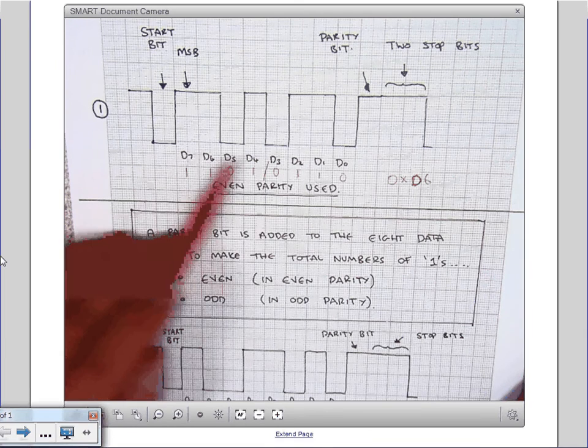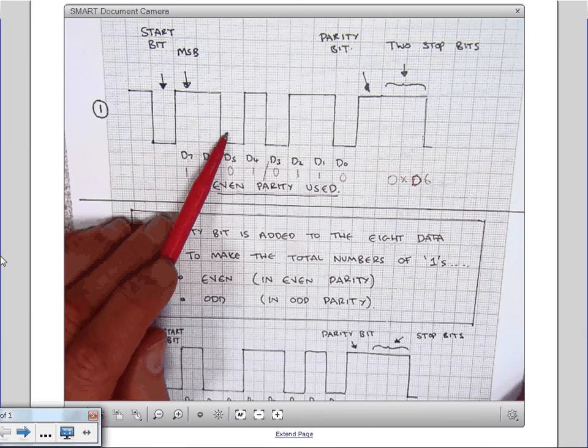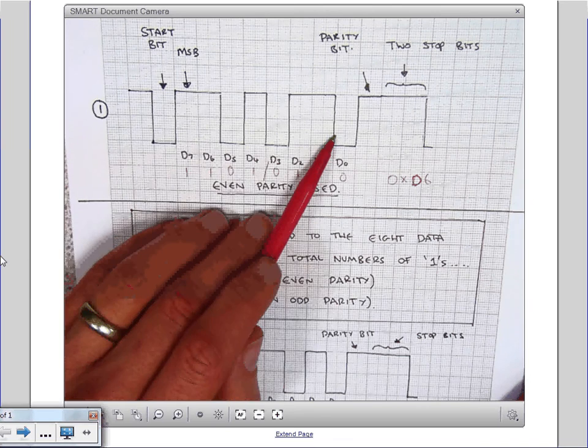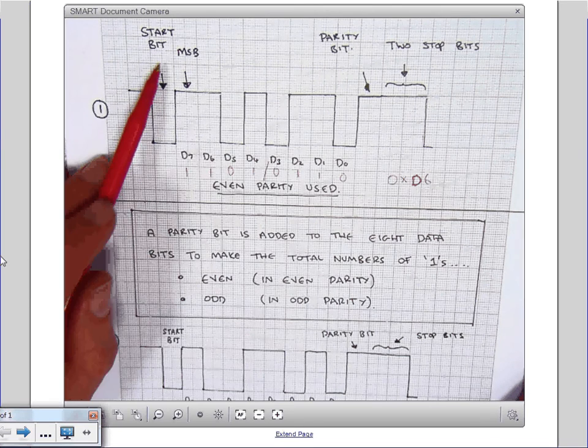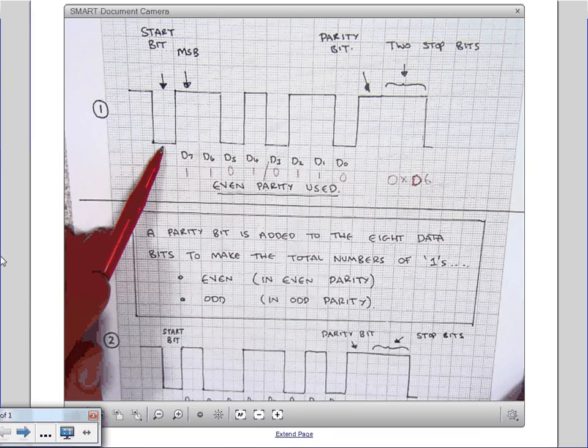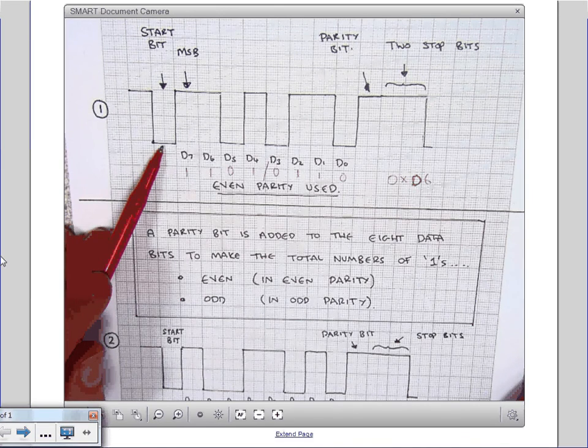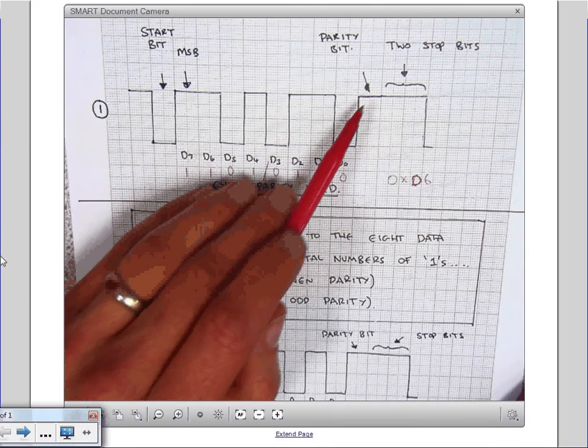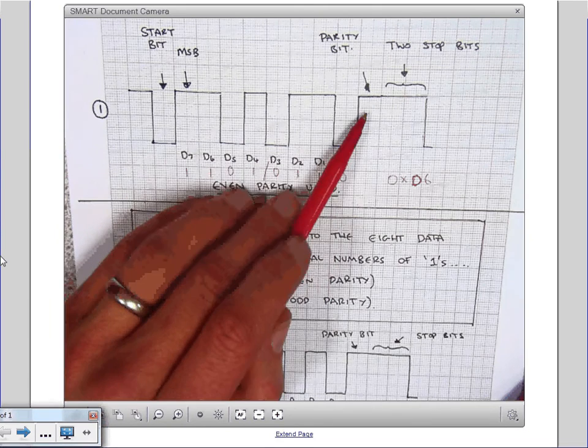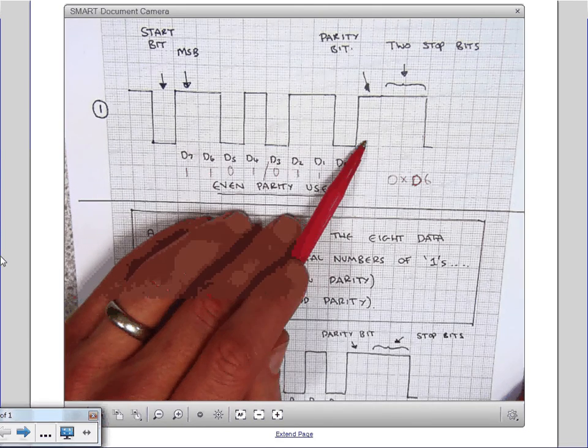So we've got a pulse which is high, high, low, high, low, high, high, low. But before that, we put a start bit which is a low to tell the receiver when that byte is about to arrive. And at the end, we put two stop bits which are always high. After the byte, we put something called a parity bit as well, which we'll have a look at in a moment.